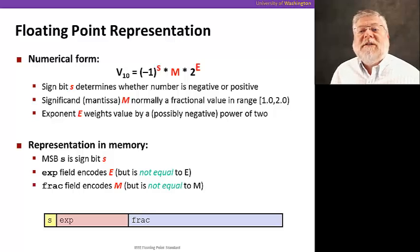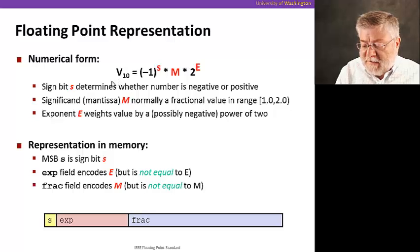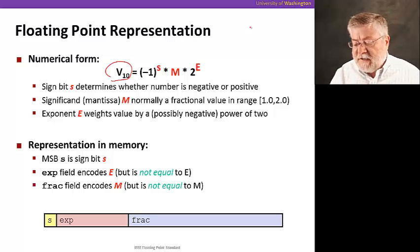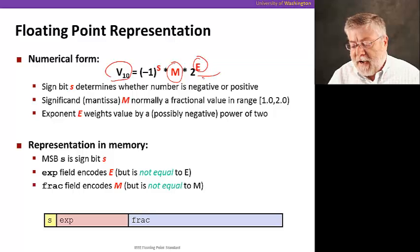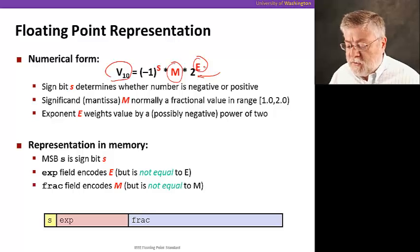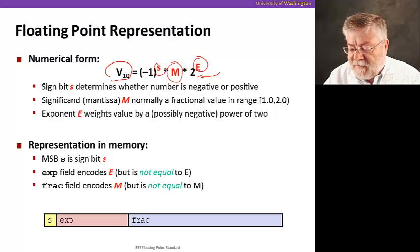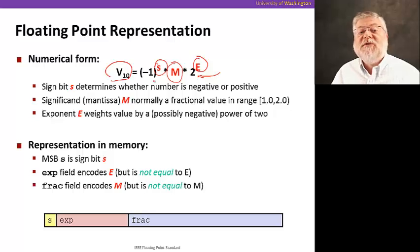Let's take a look at the details of the IEEE floating point representation. If we have a value in base 10, we are going to represent it as a magnitude and an exponent for a power of two, since we are going to binary numbers. And then we will also have a sign bit for the entire number. So this is back to sign and magnitude notation. Okay, so the sign bit is going to determine whether the number is negative or positive. Then the significand, or the mantissa M, is normally a fractional value, something in the range of 1.0 to 2.